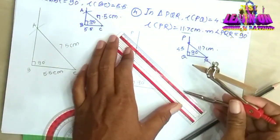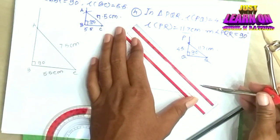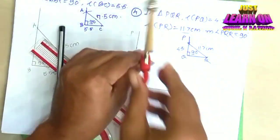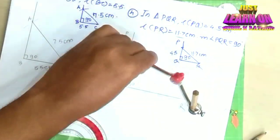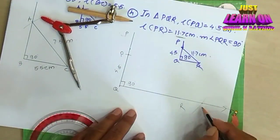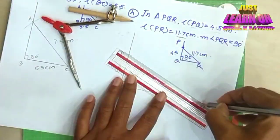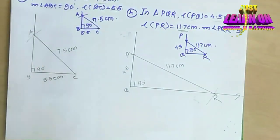Number 4: In triangle PQR, segment PQ equals 4.5 cm and segment PR equals 11.7 cm. Our rough sketch looks like this. First of all, we have to draw triangle PQR.